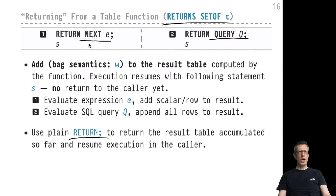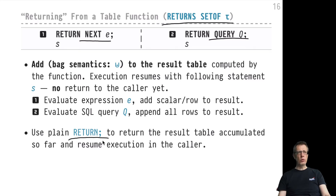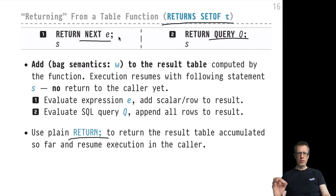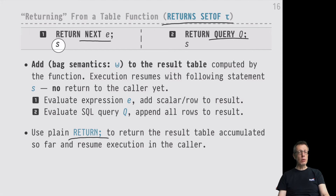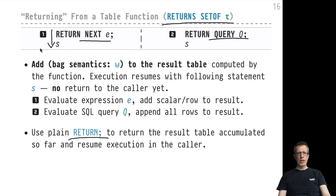We would probably have many invocations of RETURN NEXT E in our set-returning UDFs. All these values are added to the accumulated table in the background, and only one evaluation of RETURN without NEXT passes the accumulated table as the result to the caller. This also implies that RETURN NEXT E does not affect the control flow — after it adds the value of E to the accumulated table, control passes to the next statement. It may take some time to get used to the fact that RETURN NEXT does not actually return from the function.